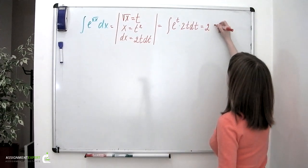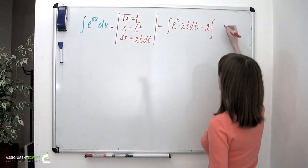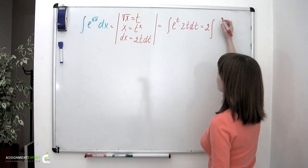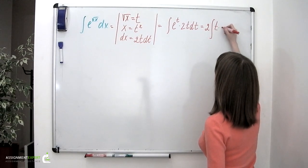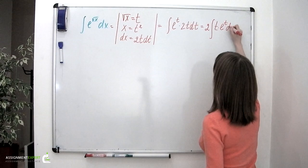Pulling 2 out of the integral, we'll have 2 times the integral of t times e to the t dt.